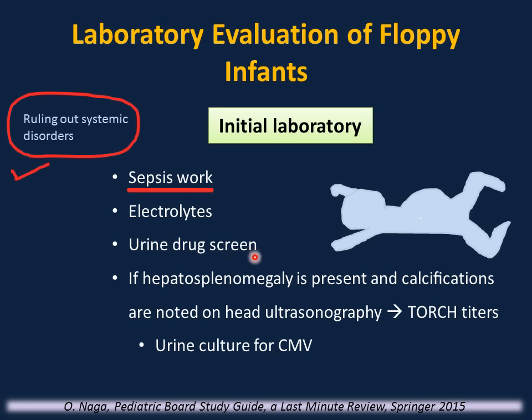Further evaluation of peripheral hypotonia: creatine kinase will be elevated in thousands in muscle dystrophy such as Duchenne muscular dystrophy. EMG — if the EMG is normal, a central cause is very likely, not peripheral. DNA testing is beneficial in cases of myotonic dystrophy and spinal muscular atrophy. Muscle biopsy, though invasive, is beneficial in cases of myopathies and muscular dystrophies.